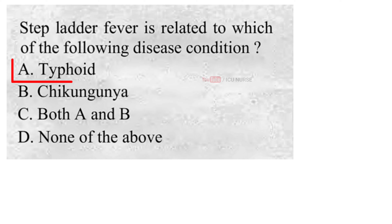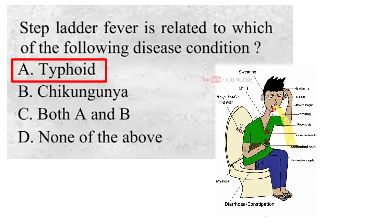A. Typhoid. Typhoid fever is an enteric fever characterized by systemic illness along with abdominal pain and fever in a step ladder pattern — a stepwise increase in temperature with a high plateau.